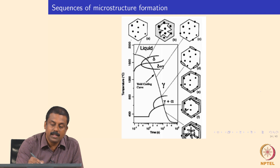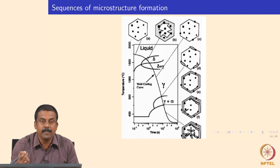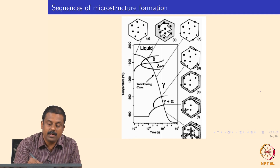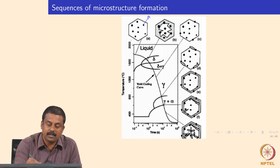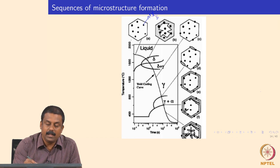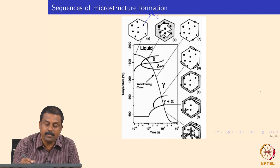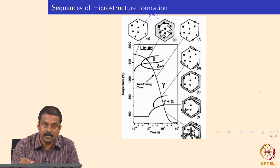The first reaction that happens in microstructure evolution is inclusion formation, and inclusions form at much higher temperatures than solidification, in the liquid region. Especially if you have oxidizing elements such as silicon and aluminum, they readily oxidize in the liquid stage and you form the oxides of aluminum and silicon. Subsequently, when you cool down and reach the solidification start temperature...